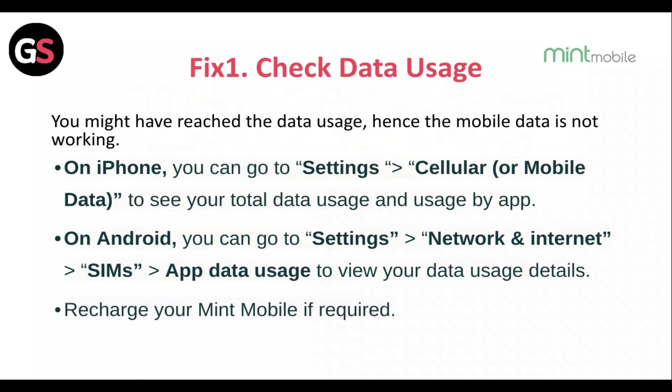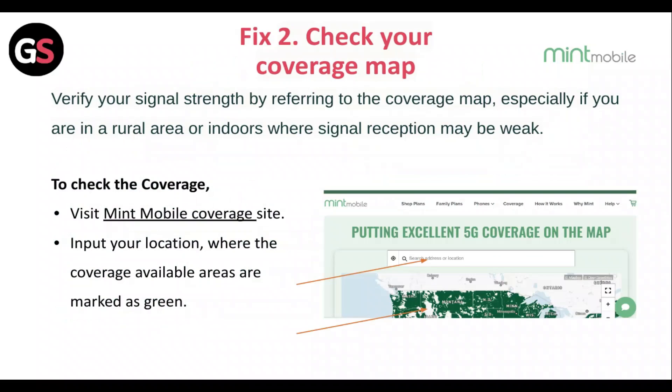Fix 1: Check data usage. You might have reached your data limit, hence the mobile data is not working. On iPhone, go to Settings, then Cellular or Mobile Data to see your total data usage and usage by app. On Android, go to Settings, then Network and Internet, then SIM, then App Data Usage to view the data usage details. Check your Mint Mobile plan if required.